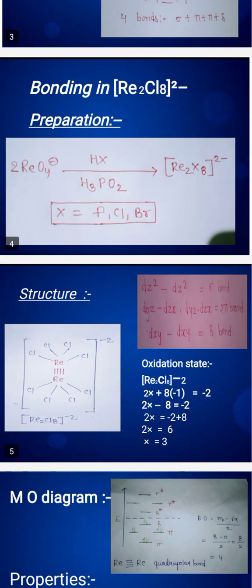If we look at this structure, first I will explain: carbon-carbon single bond, then carbon-carbon double bond with one sigma and one pi bond, then triple bond with one sigma and two pi bonds. In the same way, metal-metal forms four bonds with one sigma, two pi, and one delta bond.